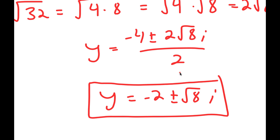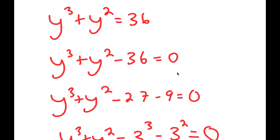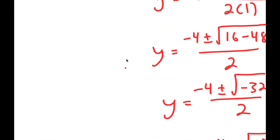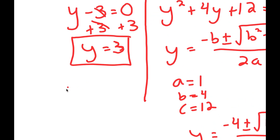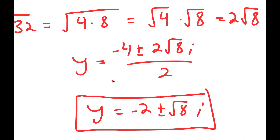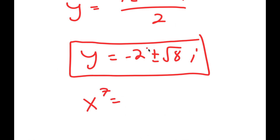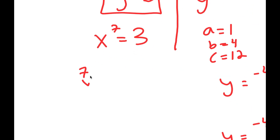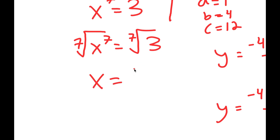However, we're not done yet, because remember we let x to the power of 7 equal to y. So if x to the power of 7 equals y, then I get x to the power of 7 equals 3, and also x to the power of 7 equals the imaginary solutions. However, you can't take the power of a number and make it equal to an imaginary number, so we cannot use those two values of y. The only value we can use is 3. So if x to the power of 7 equals 3, I take the 7th root on both sides and get x equals the 7th root of 3.